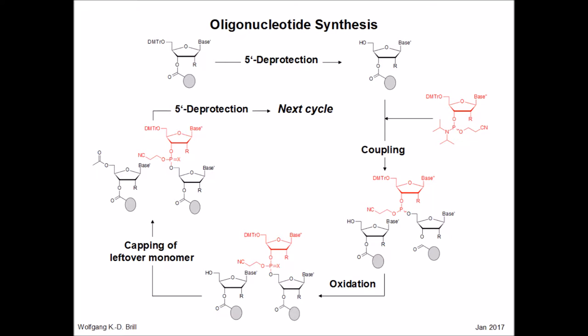Unreacted material will give rise to failure sequences, and in order to avoid an accumulation of those failure sequences, a capping step is performed. The trialkylphosphide between the two nucleosides is extremely labile and will be subsequently oxidized to give a phosphotriester, which allows further progression through the synthesis cycles. The unreacted support-bound nucleoside will then be acetylated and removed from further reactions with phosphoramidites.